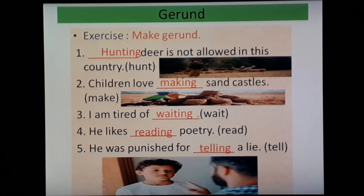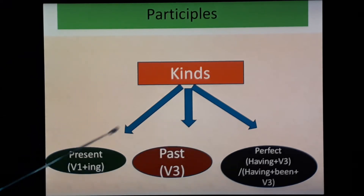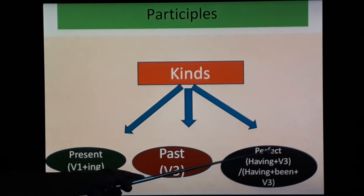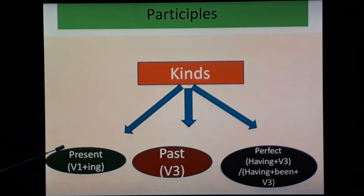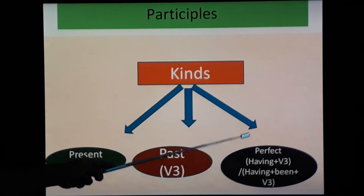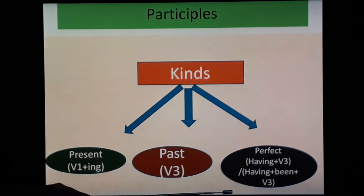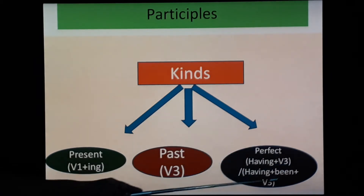Let's move to another type: participles. There are three kinds of participles. First, present participle — structure: V1 plus -ing. Second, past participle — you use V3 form. And third, perfect participle — for active voice: having plus V3; for passive voice: having plus be plus V3 form.